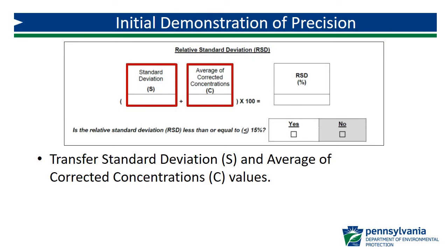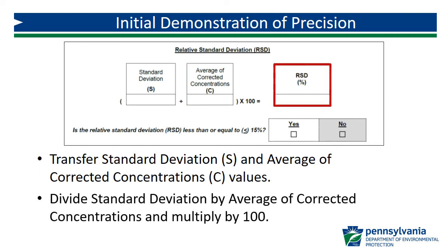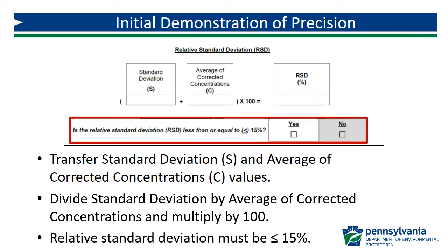Transfer the values for standard deviation, S, that was just calculated, and average of corrected concentrations, C, to the respective fields. Divide the standard deviation value by the average of corrected concentrations, then multiply the result by 100 to determine the relative standard deviation of the five replicates. If the relative standard deviation is less than or equal to 15%, the initial demonstration of precision for this analyst has been passed for this specific method.